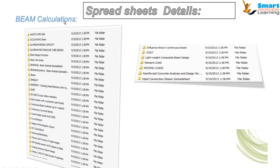Let us start with the beam calculations. There you can see the ASTRO standard, the Indian standard, normal beam calculations and beam analysis spreadsheets. Also included are flexure and torsion of single angle for structural steel, lightweight composite beam design, moving load calculations, reinforced concrete analysis and design, and steel connection design spreadsheets.